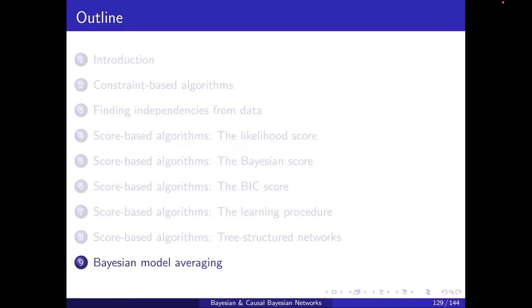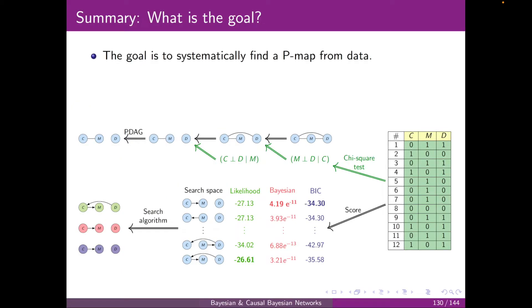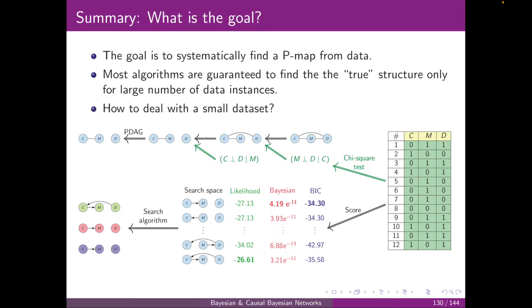Hello and welcome to Section 9, Bayesian Model Averaging. The goal is to systematically find a p-map from data, and we saw that most algorithms are guaranteed to find a true structure only for large numbers of data instances. What about smaller size datasets? How to deal with them?